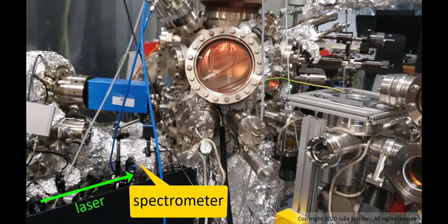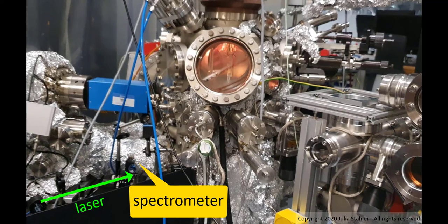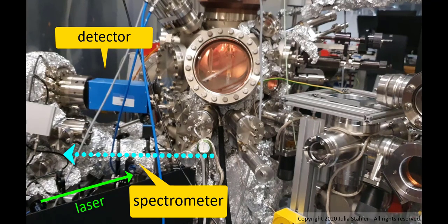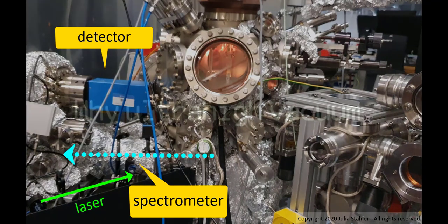When we now hit the sample with laser light, we can eject electrons, which then travel all the way through the spectrometer to the detector without any collision with molecules. So, ultra-high vacuum enables photoelectron spectroscopy.